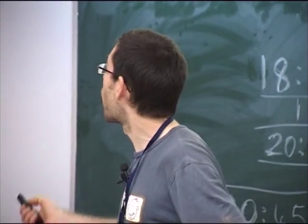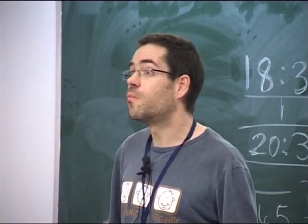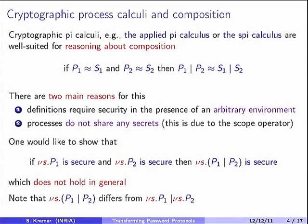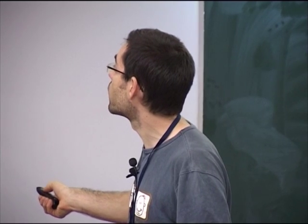There's one important hypothesis: P1 and P2, as they are written there, do not share any secret value. This is generally due to the fact that the secrets are modeled using a scope operator. For instance, if I have new S P1, meaning S is a secret used in P1 under a given scope, and new S P2 is secure, then I would like to conclude that new S, shared between these two protocols P1 and P2, is secure. But this is not true in general, because when going under the scope operator, this is not anymore a process executed really in parallel.